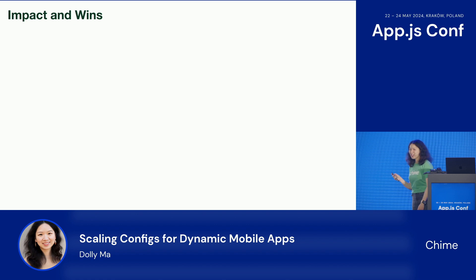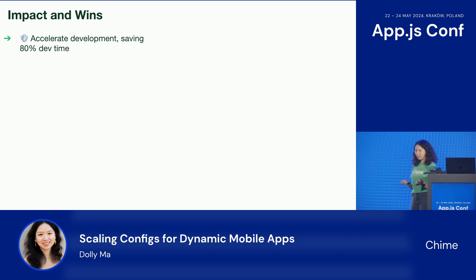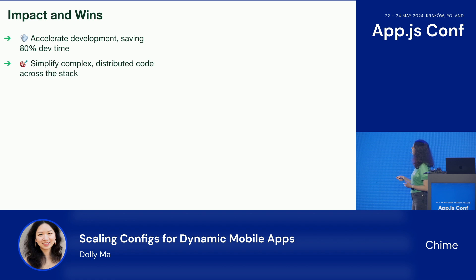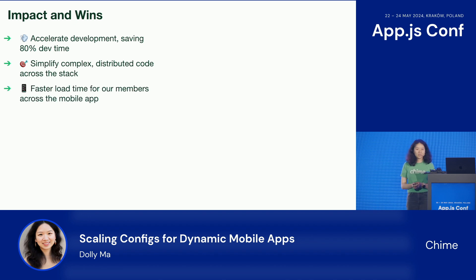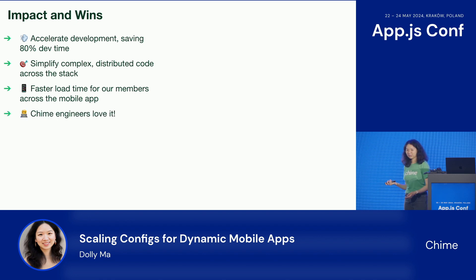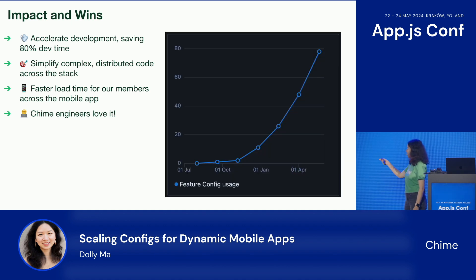Now it's time to celebrate — let's look at the impact and wins. Feature config has accelerated overall development, saving about 80% of the time. It also reduced the five manual steps to two, and simplified complex distributed code across the stack. It also means faster load time for overall app performance. And Chime engineers love it — ever since we launched it last year, the usage has skyrocketed.